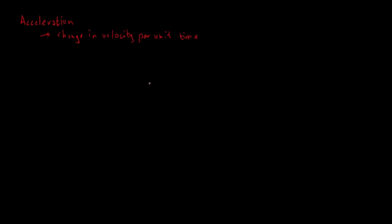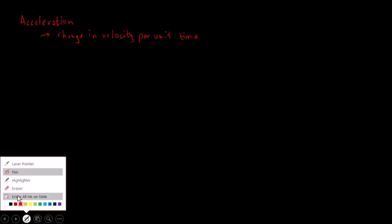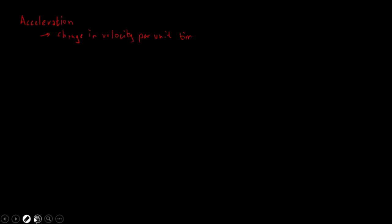So change in velocity per unit time — what does that mean? The unit for velocity is meters per second. If we have this change per unit time, we will also have per unit time, so our unit for acceleration is meters per second squared. That is how we arrive at the unit for acceleration.